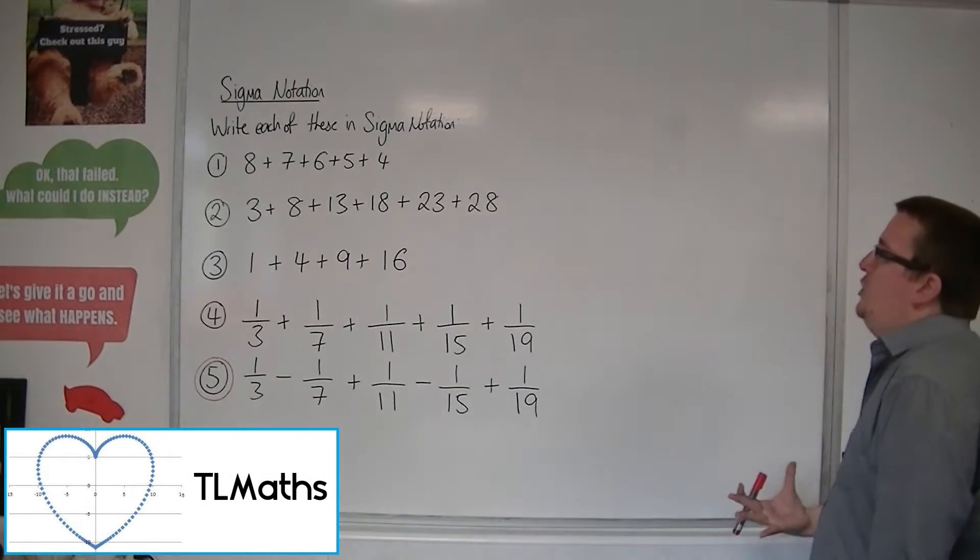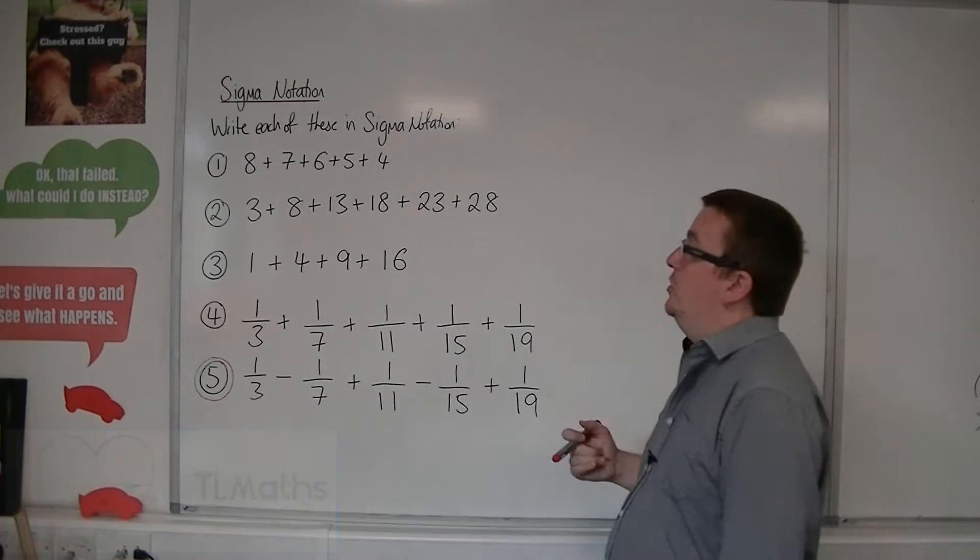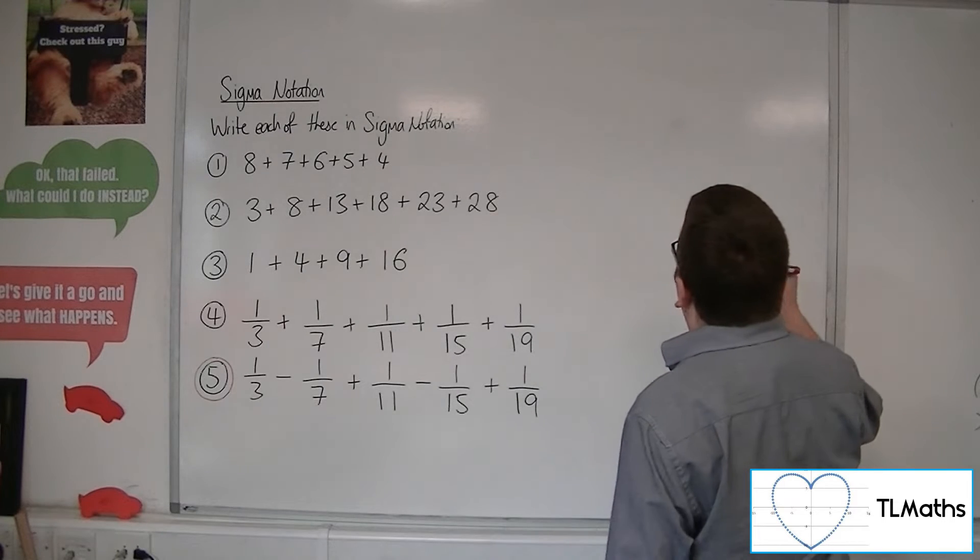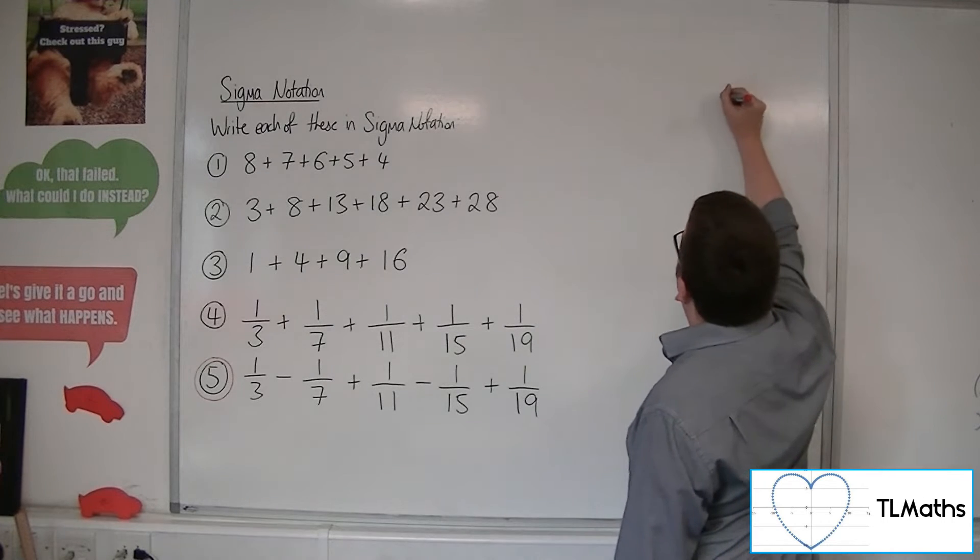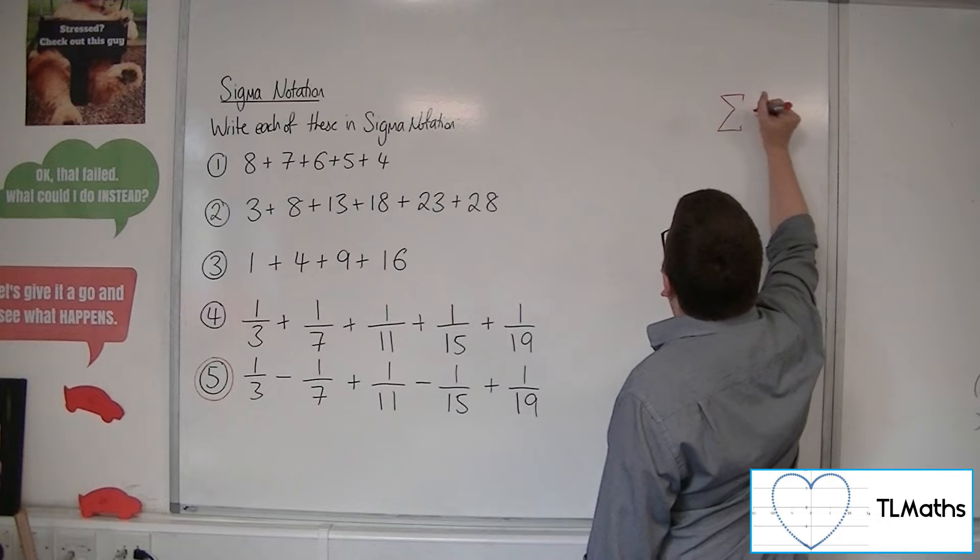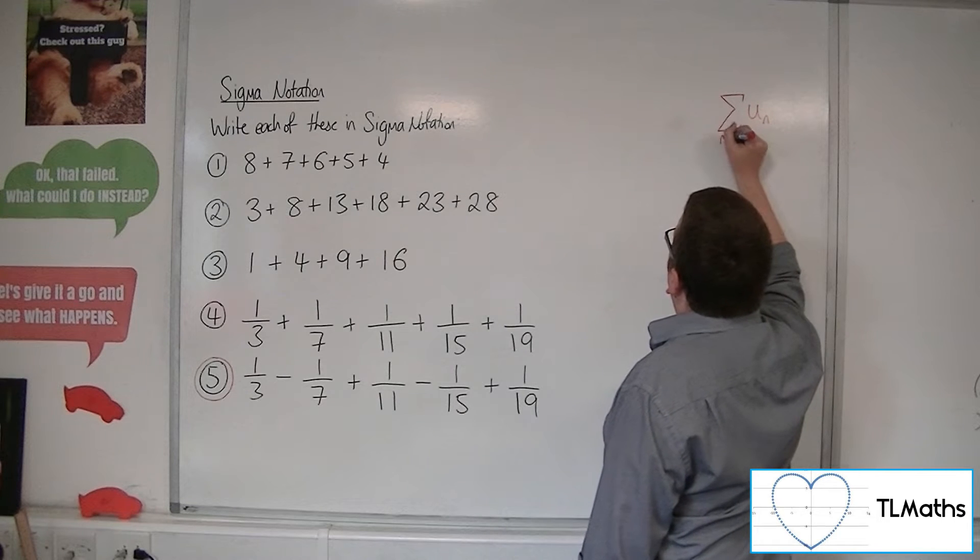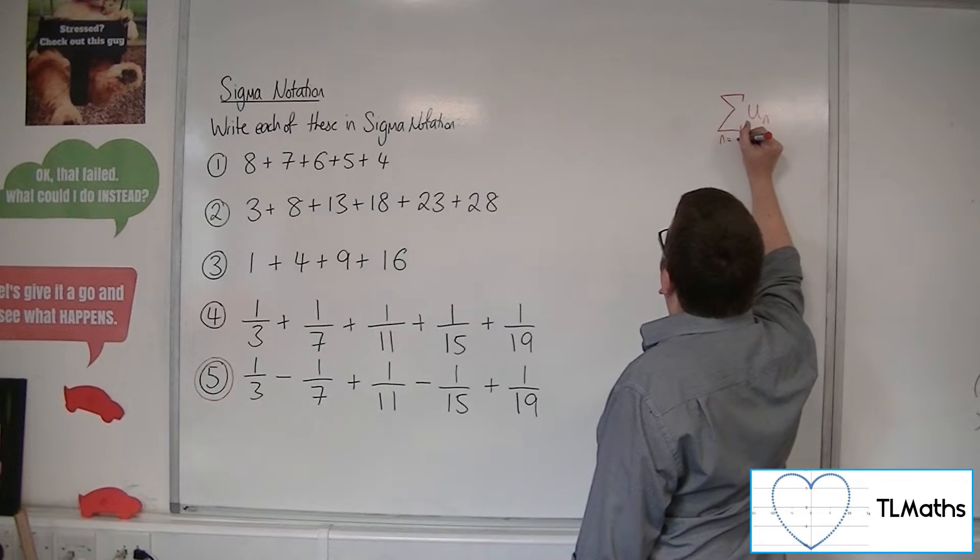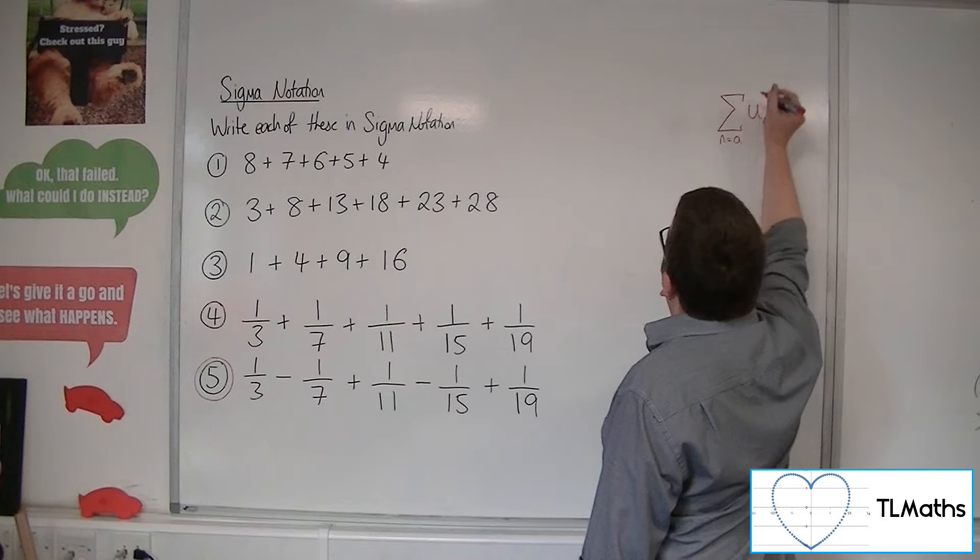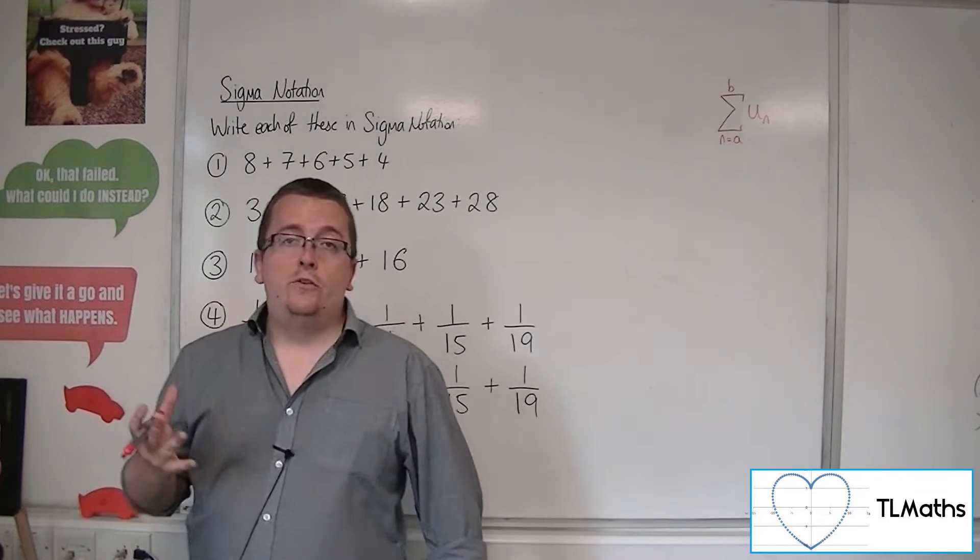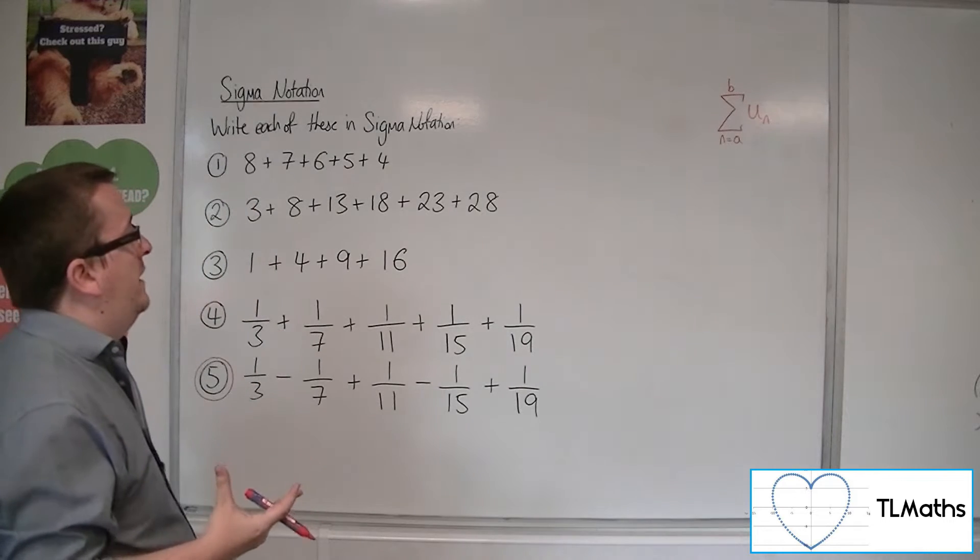Let's say I want to write each of these in sigma notation. Remember that what we're doing here is we're wanting to write them in this format. So we've got the sigma, we've got some nth term, and we're saying that n is going from some value up to another value. This is the format that we want to write these in.